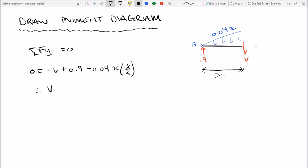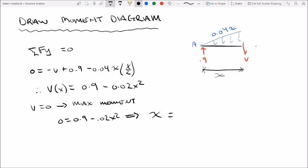Therefore our shear is equal to, when shear equals zero we can get our max moment location. So if we set that equal to zero, we get zero equals 0.9 minus 0.02x squared. x is equal to 6.7 feet.